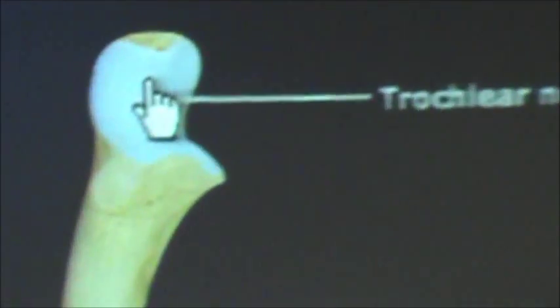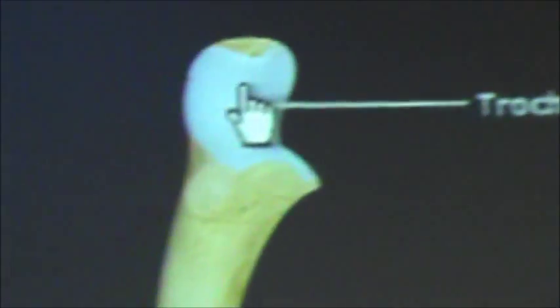Next, we have the trochlear notch, which articulates with the trochlea of the humerus.